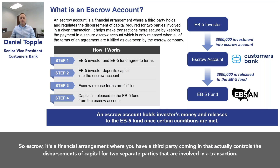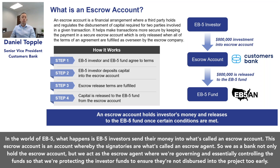Escrow is a financial arrangement where a third party comes in and controls the disbursements of capital for two separate parties involved in a transaction. In the world of EB-5, what happens is EB-5 investors send their money into what's called an escrow account.